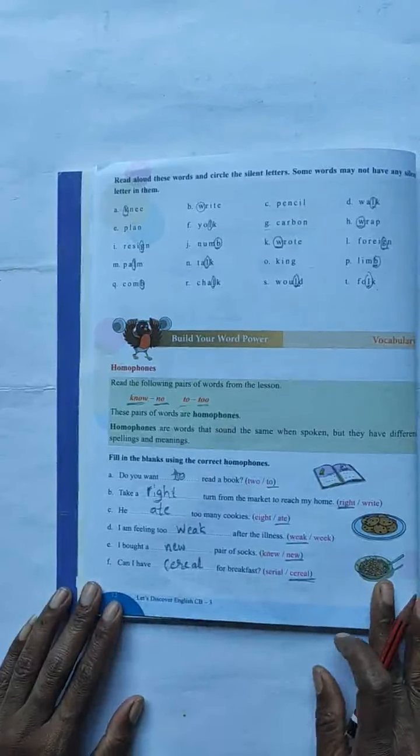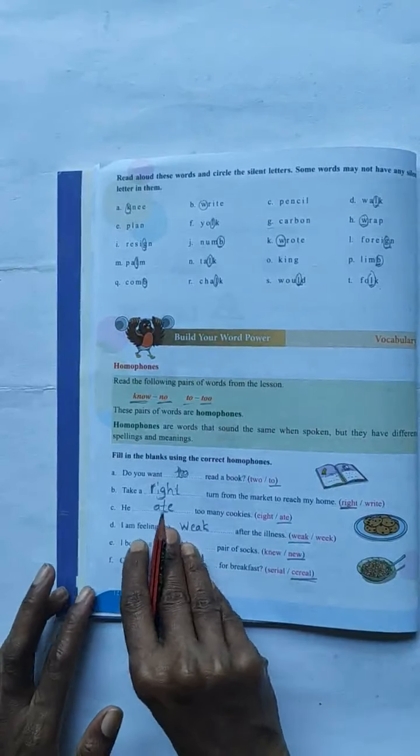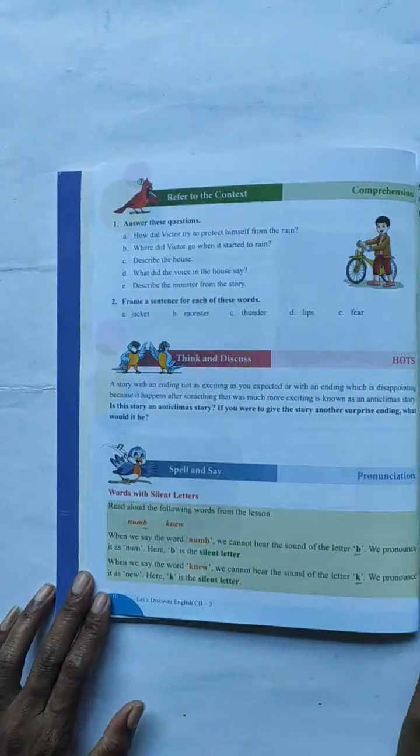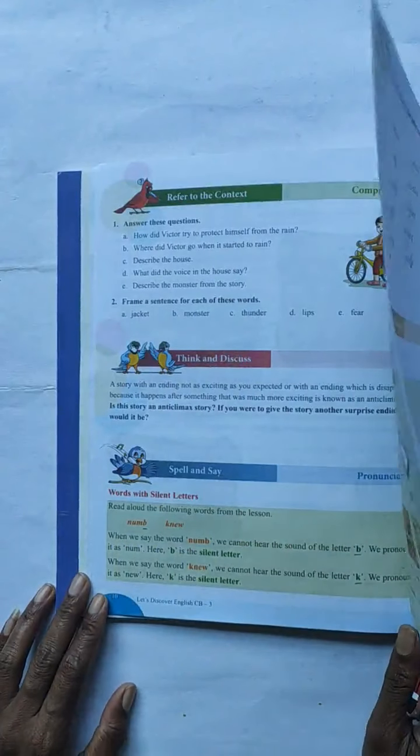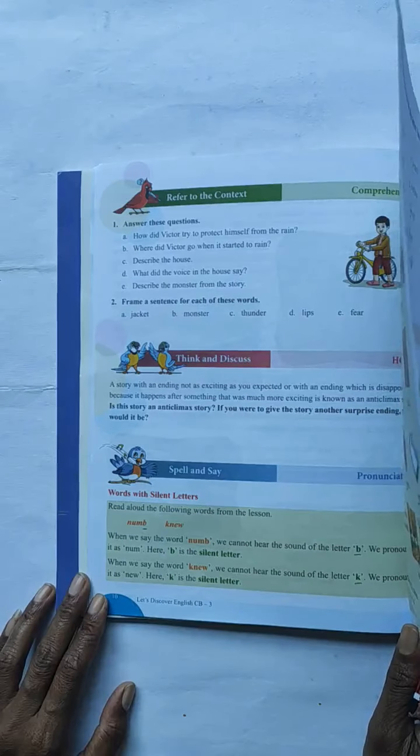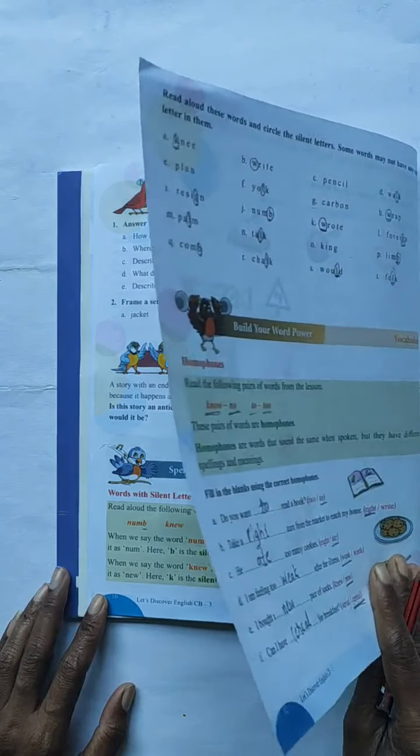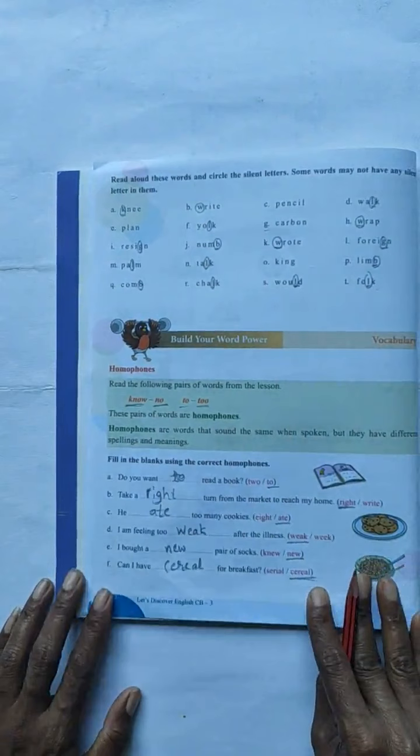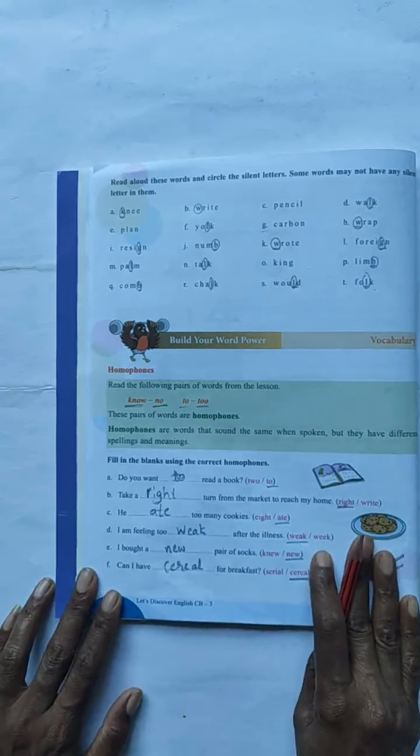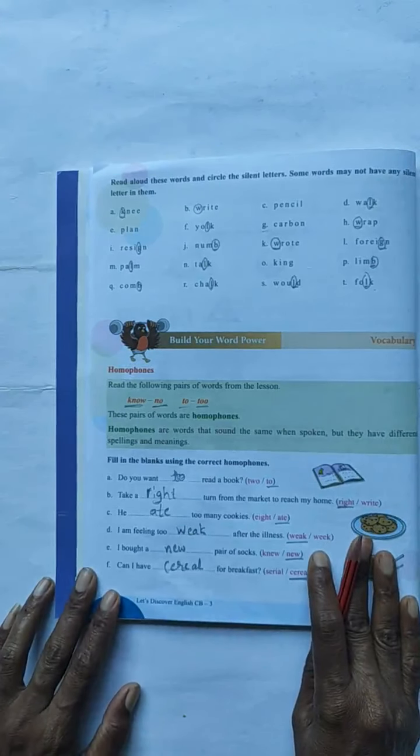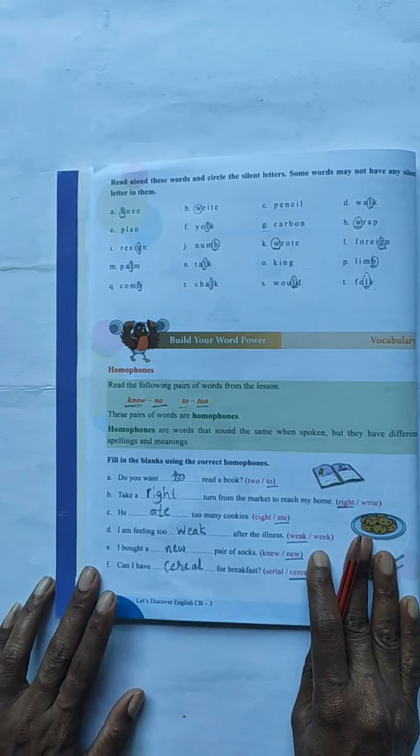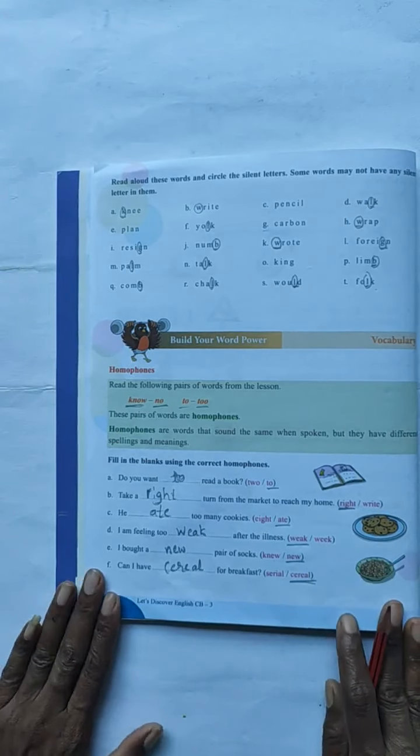Good afternoon children. Already you have learnt in the previous class letters which we cannot hear the sound. We call silent letters. You know, already you have learnt. But now we are going to learn about homophones.